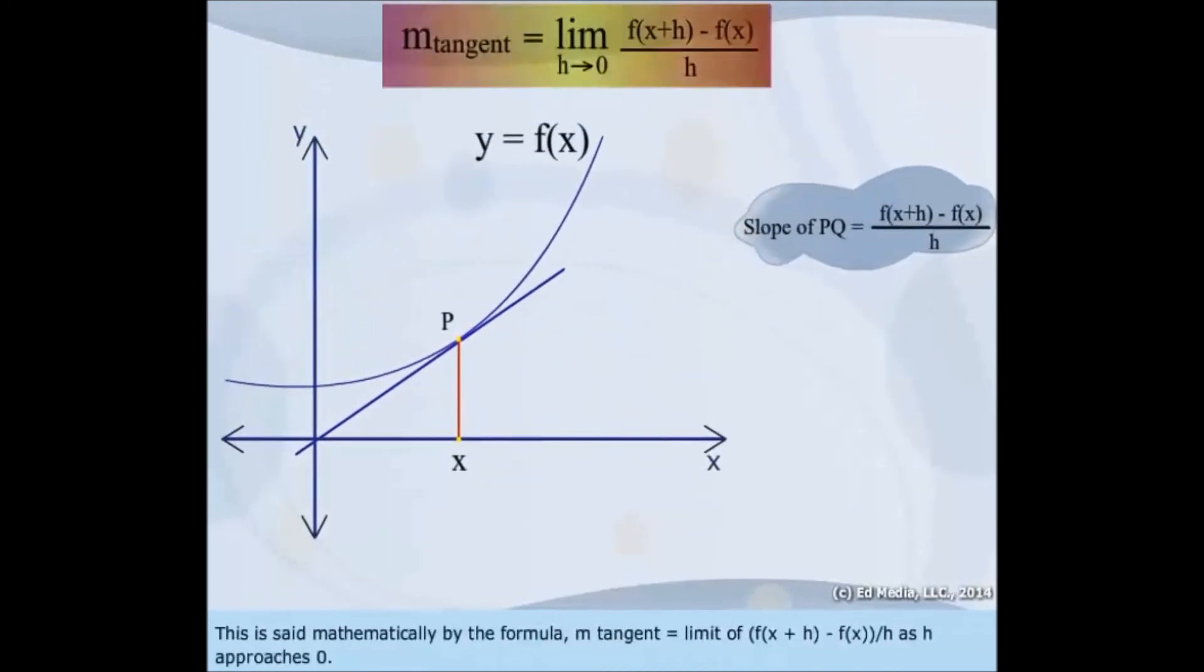This is said mathematically by the formula: m tangent equals the limit of f(x + h) minus f(x) over h as h approaches zero.